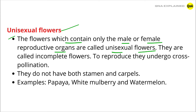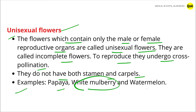They are called incomplete flowers. To reproduce, they undergo cross-pollination. They do not have both stamen and carpels. Examples: papaya, white mulberry, and watermelon.